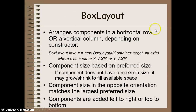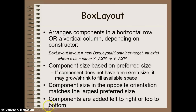For a horizontal Box Layout, the width of each component is based on its preferred size, while the overall height is based on the tallest component in the row — all others stretch to match that height. For a vertical Box Layout, the opposite applies: heights are based on each component's preferred height and the overall width matches the widest component. Components are placed in the order they are added, left to right or top to bottom.